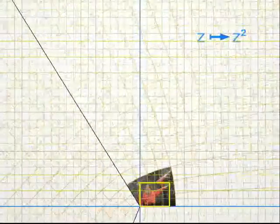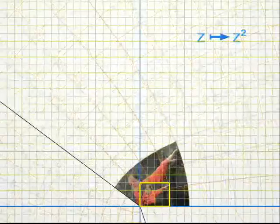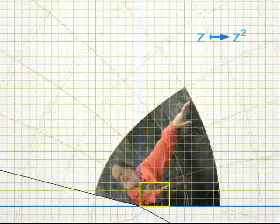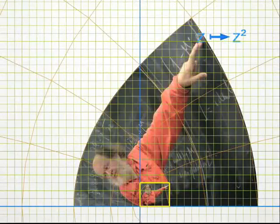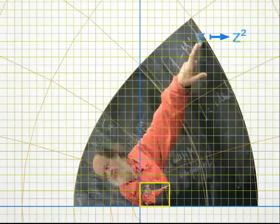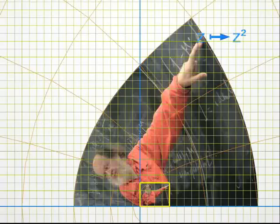Notice that the argument of Z squared is twice the argument of Z, so that the right angle on the lower left of the photo is doubled under the transformation. It has turned into a 180 degree angle.